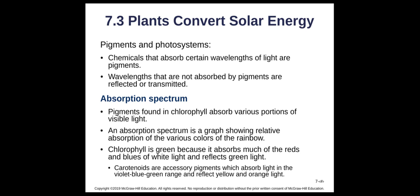There are also carotenoids and accessory pigments, which absorb violet, blue, and green light and reflect yellow and orange. You've seen these if you've ever watched a tree change colors in fall — we get pretty yellows, oranges, and reds because the chlorophyll dies off as sunlight decreases, and we see those other accessory pigments: the yellows, reds, and oranges.